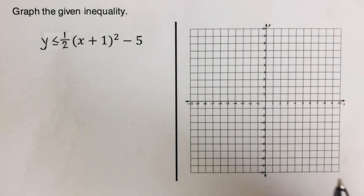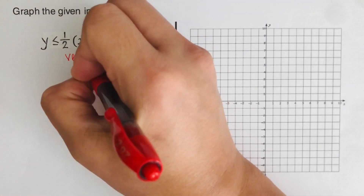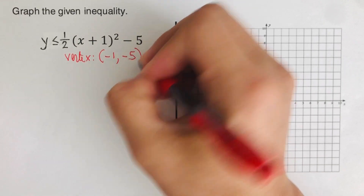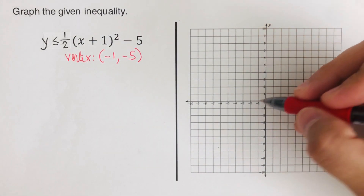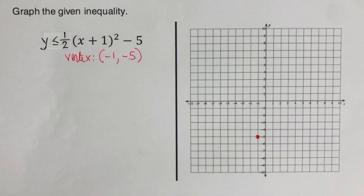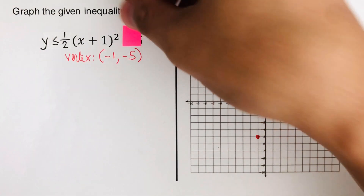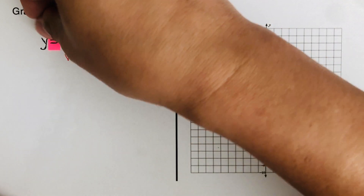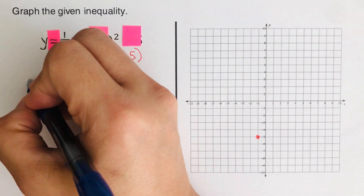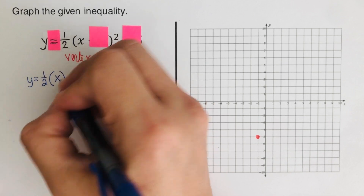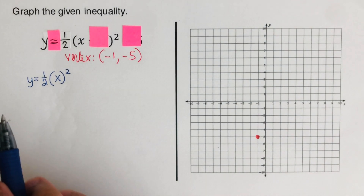For the third example, we determine the vertex: switch and keep gives us negative 1 and negative 5. We plot the vertex at (−1, −5). We cover the h and k and change the inequality to an equal sign, giving us the working equation y = (1/2)x².